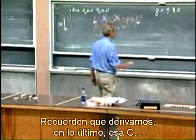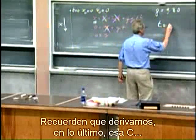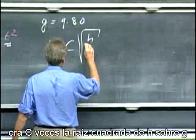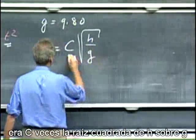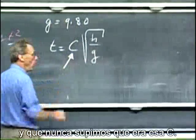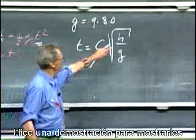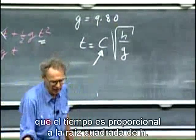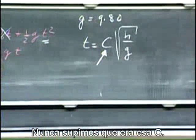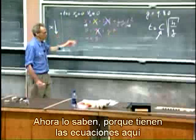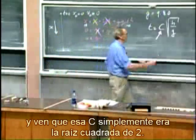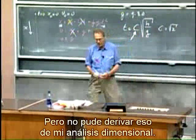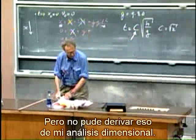Remember that we derived last time that the time it takes for the apple to fall was c times the square root of h over g, and we never knew what that c was. I did a demonstration to show you that the time is proportional to the square root of h, but we never knew what c was. Now you know, because now you have the equations, and you'll see that c simply was the square root of two — but I could not derive that from my dimensional analysis.